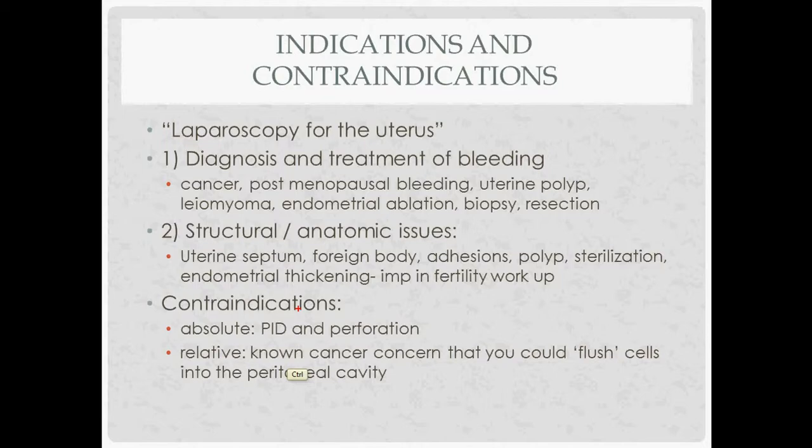The second major category of indications are structural or anatomic issues or problems. So you could look for a septum, foreign bodies, adhesions, polyps. You can perform treatments like sterilization. You can investigate endometrial thickening. This structural and anatomic category is really important for infertility workups.